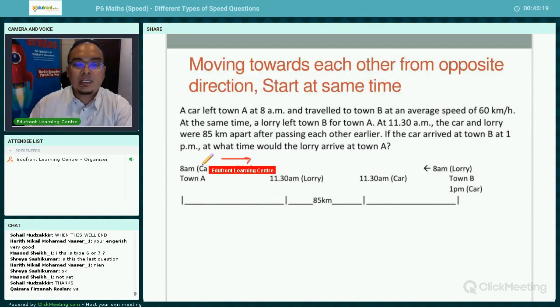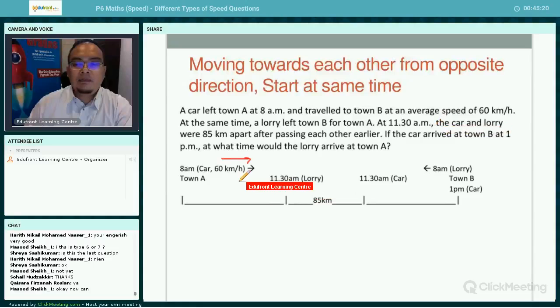And the average speed is 60 kilometers an hour. At the same time of 8 a.m., the lorry left town B for town A. That means the lorry is traveling in the opposite direction.